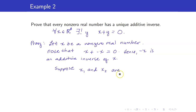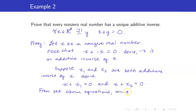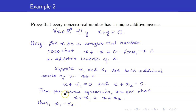For uniqueness, suppose x₁ and x₂ are both additive inverses of the arbitrary real number x. Then x plus x₁ equals 0 and x plus x₂ equals 0. Since both expressions equal 0, x plus x₁ must equal x plus x₂. Thus, x₁ must equal x₂ — which is exactly what we wanted to show: that x₁ and x₂ must coincide.